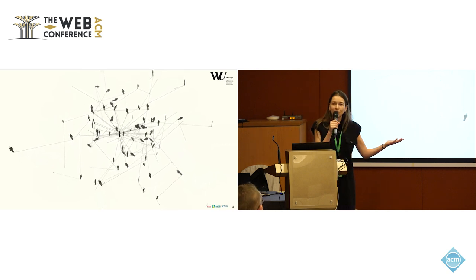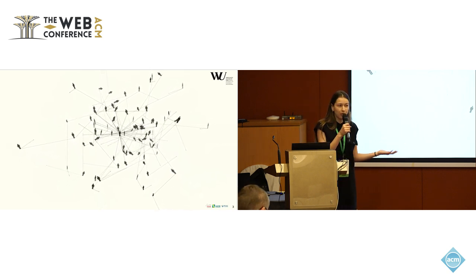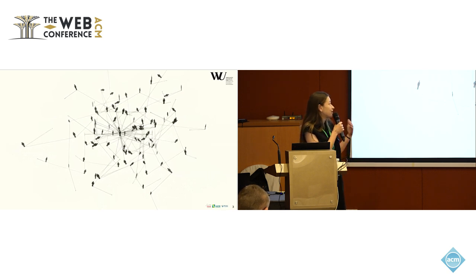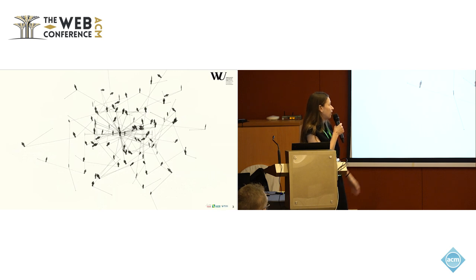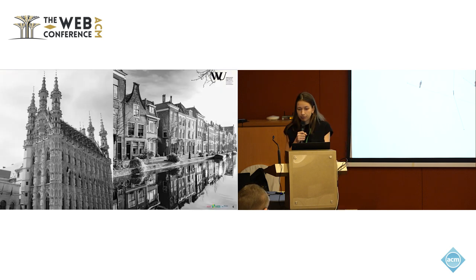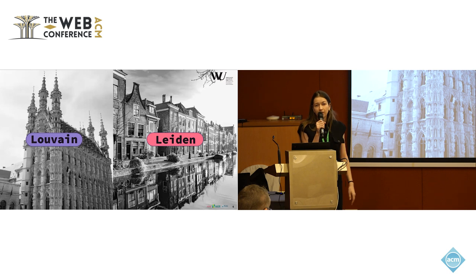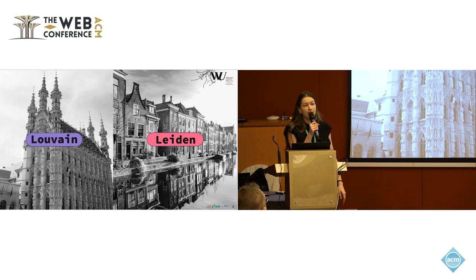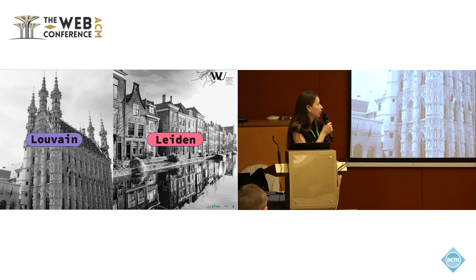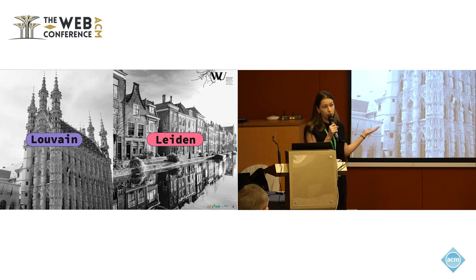Exactly in this situation, community detection algorithms come in handy, because they help us understand and uncover those cohesive structures within the network. In our article, we compared two prominent community detection algorithms: Louvain and Leiden. Both algorithm names are based on the cities where they were created, with the aim to assess the efficiency of communities detected by those two algorithms.